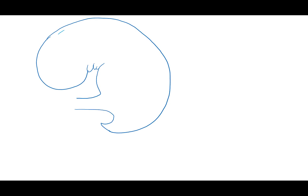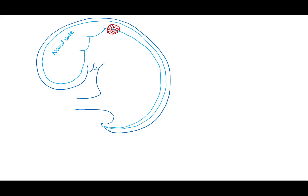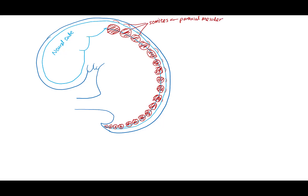We begin the story of neuromuscular development in embryonic week 4. By this time, all of the organ systems in our body have been kind of established, including the closed neural tube that is sitting in the dorsal midline. On either side of the neural tube, we have the somites, which derive from the paraxial mesoderm.